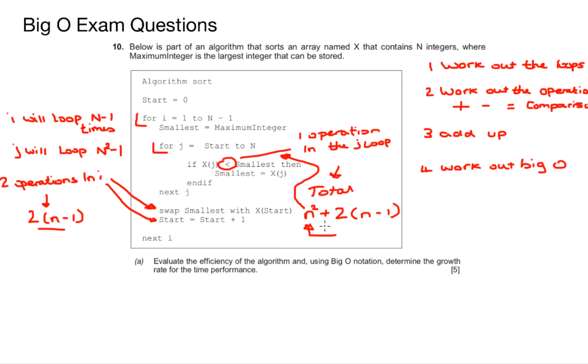Step four is to work out that n squared will dominate in this equation because the more data we add, n squared will grow faster than any other term, making the growth rate for time performance here order of n squared. And that's it for question a. Your marks here will come from identifying the loops and the number of iterations that it will do, and then comes from working out the number of operations that are carried out within those loops, then adding up your total number of operations, and then working out the final Big O notation.